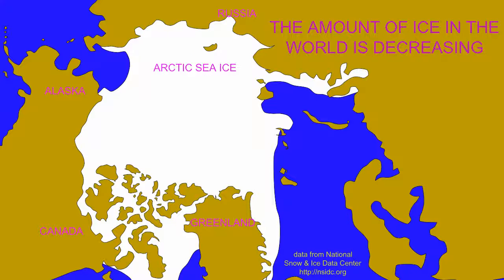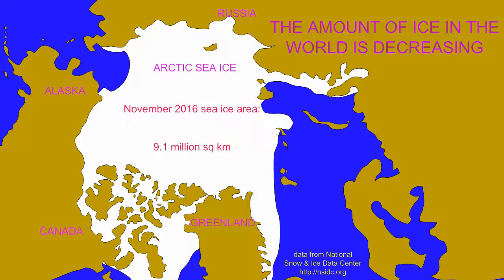The amount of ice in the world today is decreasing, and this will have an effect on sea level. If one were to take a month, November of 2016 for example, one would observe that there was less ice in the Arctic than was the historical norm.